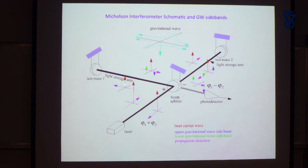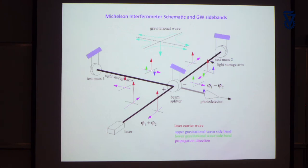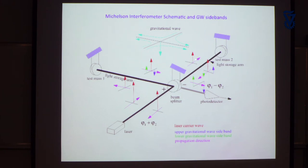The carrier travels down one arm, hits the mirror — which is moving back and forth due to the gravitational wave — and comes back. You see the carrier at the same height, but now there are sidebands: one at a slightly higher frequency, one at a slightly lower frequency, differing by the gravitational wave frequency. These are phase-modulated sidebands because the mirror is moving, not amplitude-modulated.